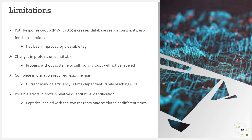Of course, the ICAT technology also has its limitations. The ICAT reactive group, with molecular weight equal to 570.5, increases the complexity of database searches, especially for short peptides — though this problem has been improved by cleavable tags. Proteins without cysteine or whose sulfhydryl groups are unavailable will not be labeled, so changes in these proteins will not be identified. This method requires complete labeling: the mark must be specific and complete, but current marking efficiency is time-dependent and rarely reaches more than 80%. Additionally, peptides labeled with the two reagents may be eluted at different times, potentially introducing errors in their relative quantitative identification.